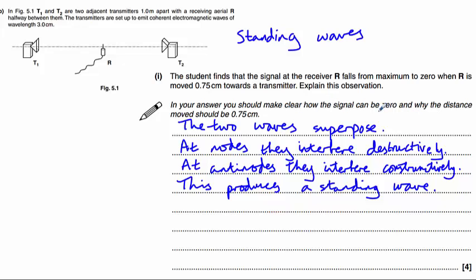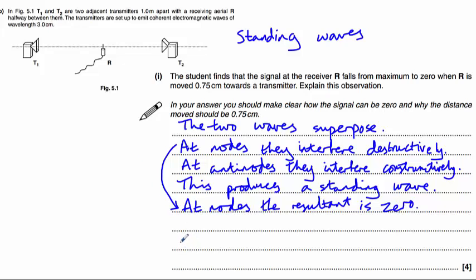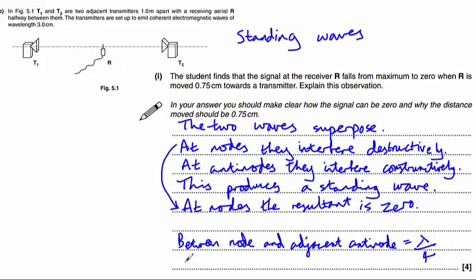The second part asks us to explain how the signal can be zero and why the distance moved is 0.75 centimetres. As a result of destructive interference at nodes, the resultant is zero. The distance between a node and an adjacent anti-node is lambda divided by 4, which is 3 centimetres divided by 4, equalling 0.75 centimetres.